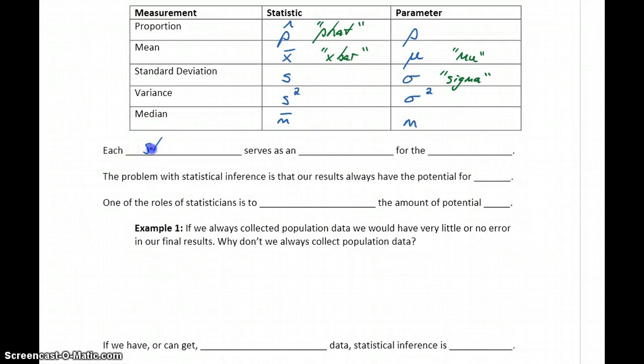Each statistic serves as an estimator for the parameter. We have the value that we know from our sample data, and the actual value if we're able to collect all the population data. We're going to use this sample statistic to make an estimate about that population parameter. The problem with statistical inference is that our results always have the potential for error.